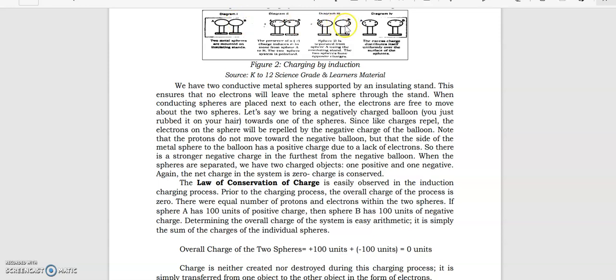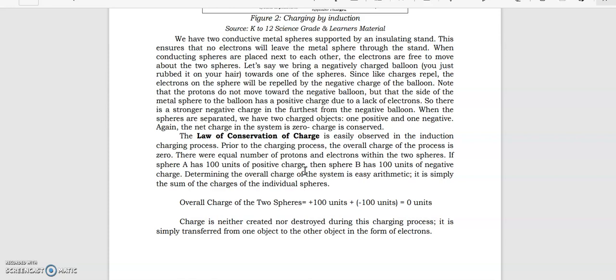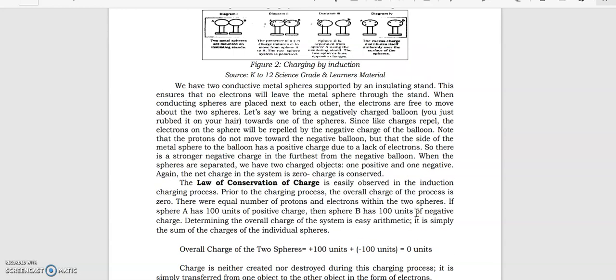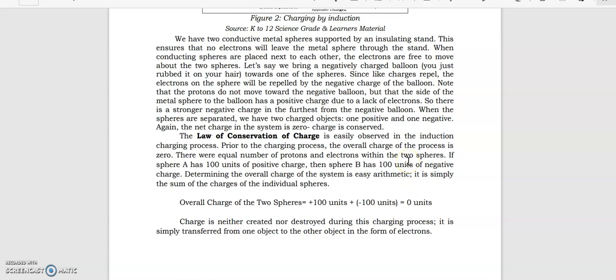Upon separating them, sphere B will become a negatively charged material. Take note, the balloon did not touch sphere A, it was just brought close. The law of conservation of charge applies to this type of charging. The overall charge of these two spheres, for example positive 100 units of protons plus 100 units of electrons, equals zero units. Take note, charges are neither created nor destroyed, they just transfer from one sphere to another. Only electrons can freely move because they're outside the nucleus. Protons are held in the nucleus, so they cannot freely move.